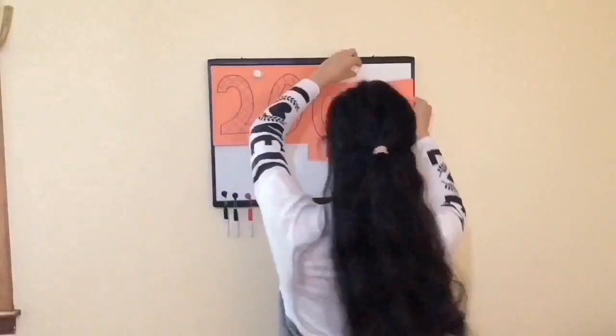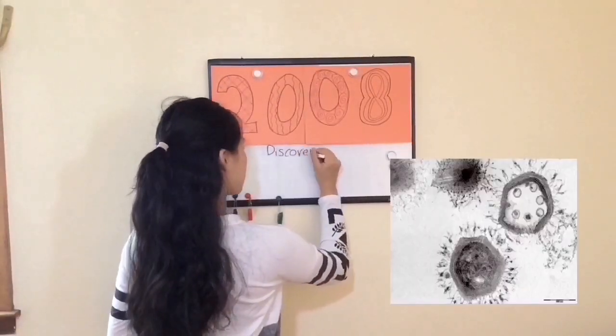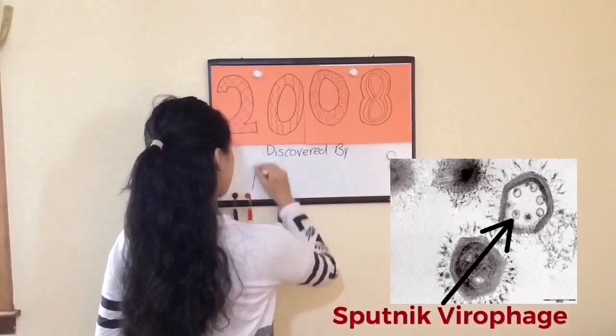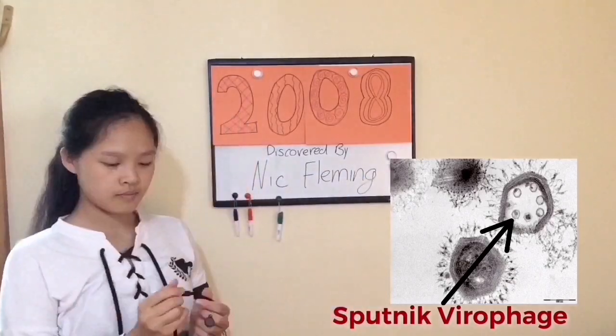In 2008, we discovered the existence of the first Sputnik virophage — a virus that infects other viruses. How do you like getting a taste of your own medicine? These virophages infect big giant viruses, such as mimi viruses or pandora viruses.